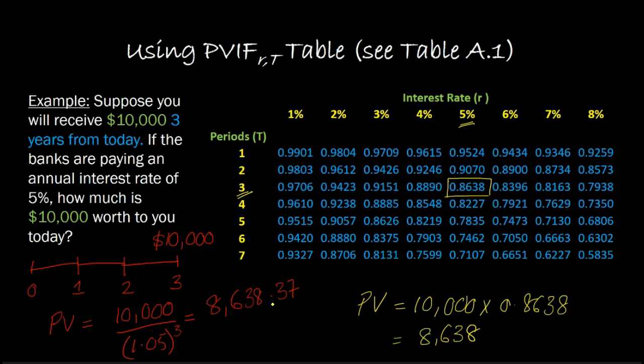Of course, if you had six decimal places instead of four, you would get exactly $8,638.37. This is how we can use present value interest factor tables to determine the present value of any amount that we're getting T years into the future for a known interest rate.